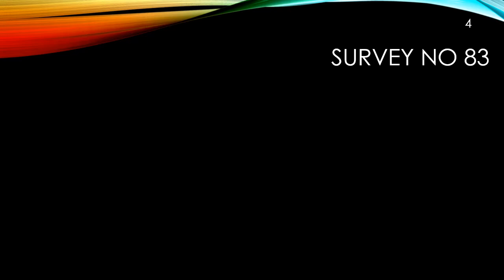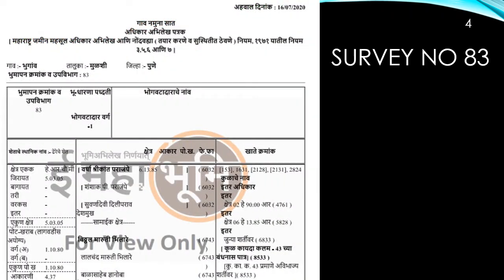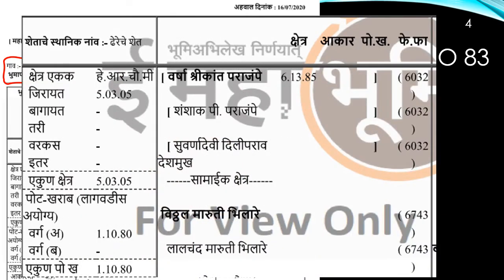Let us look at the details of the land in survey number 83. The best place to start is the saad bara utara, or the extract of the 7/12 statement of property, which is available from the registrar's office. This is a saad bara for survey number 83 in Bhuga village, Taluka Mulshi. In a close-up view we can see the name of the owner, which is Varsha Srikant Paranspay.